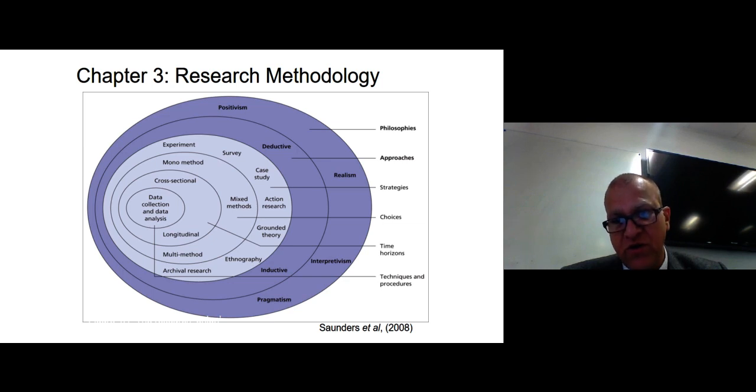What you see in front of you is the research onion. This onion has layers starting from outer layer which is the philosophy. So broadly two philosophies: positivism versus interpretivism. Once that is covered, you go to the next which is approach: deductive or inductive. You will see that positivism is close to deductive and interpretivism close to inductive.